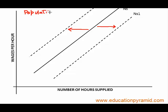One such factor is increase in population. If more people come into the country or into the market, supply of labor will increase. And if people leave the market or leave the country, the supply of labor will shift towards the left.